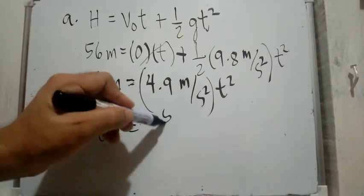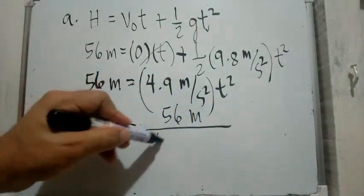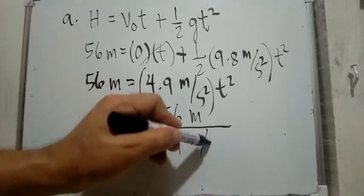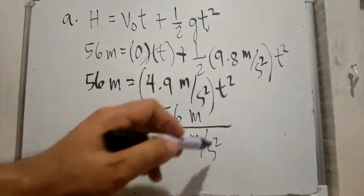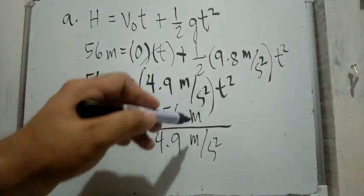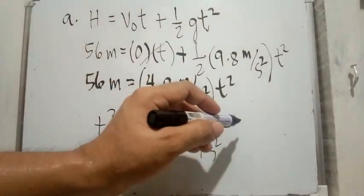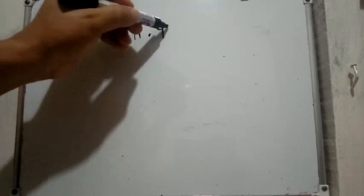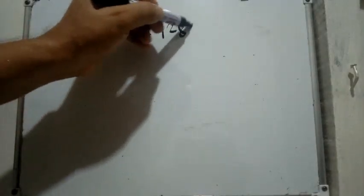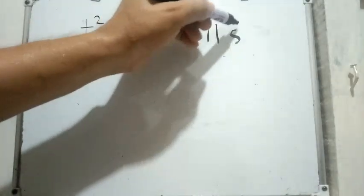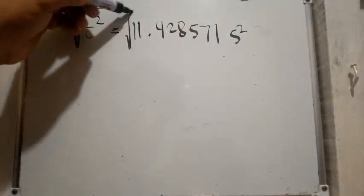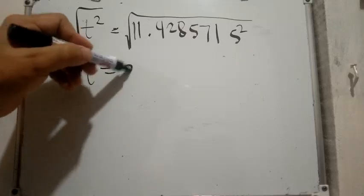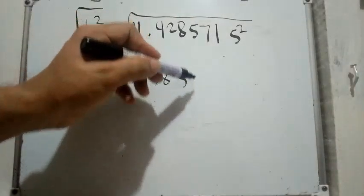Dividing both sides by 4.9 m/s²: we get 56 meters over 4.9 m/s². The meters cancel out and the unit becomes s squared. So t squared equals approximately 11.43 s², and taking the square root of both sides, t equals 3.38 seconds.